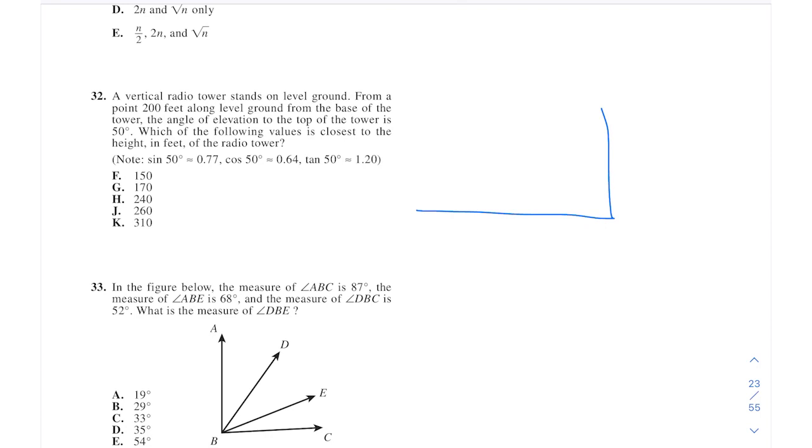Okay, so this is 200 feet along the ground. Here's our tower. Angle of elevation is this angle over here, 50 degrees. And the height of the tower. So we're trying to find this. So here we would probably use tangent. So tangent 50 is going to be your opposite over your adjacent. So that would be 200 times 1.2 would be 240.